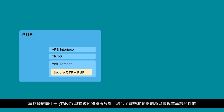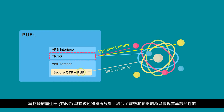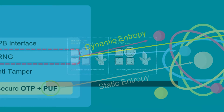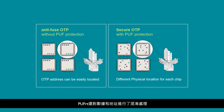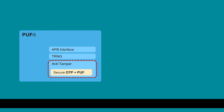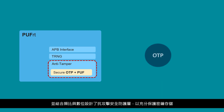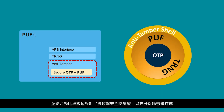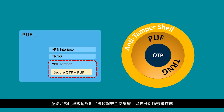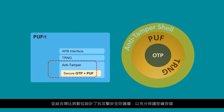Our true random number generator has both digital and analog designs, combining static and dynamic entropy sources for superb performance. PUF RT also obfuscates data and addresses and adds various security protection designs with physical and digital comprehensive tamper-proof features in an anti-tamper shell to fully protect the secret key.